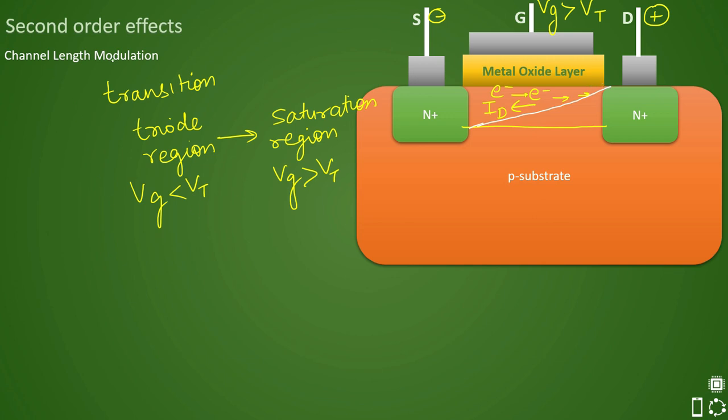And this is modulation of channel length and this is not straight and not uniform, so that modulation is called as channel length modulation and it is a phenomena that occurs in the short channel effects.